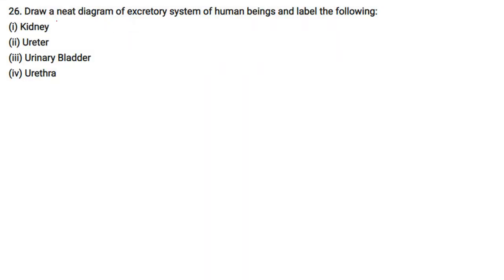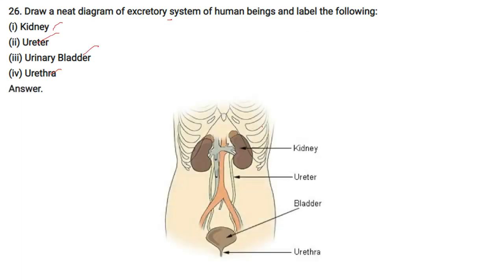Draw a neat diagram of the excretory system of human beings and label the kidney, ureter, urinary bladder, and urethra. These are the kidneys, the ureters (two of them), the bladder, and the urethra.